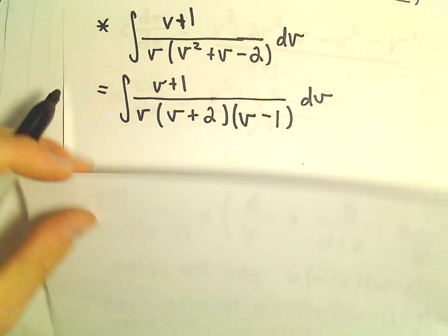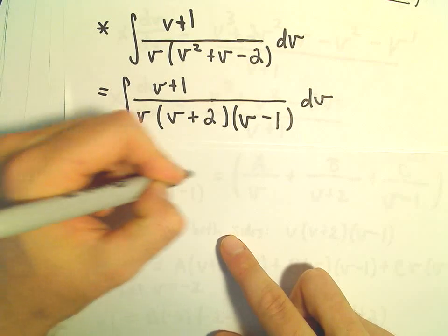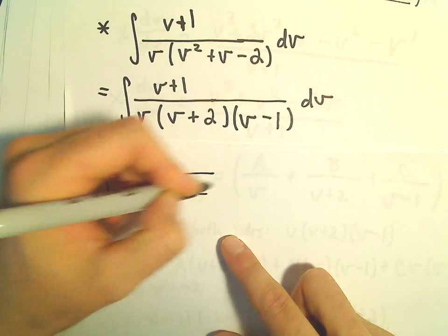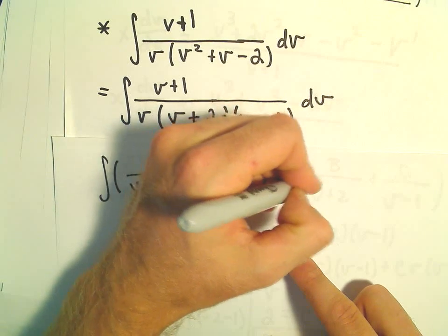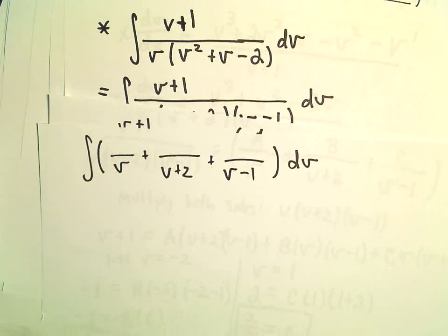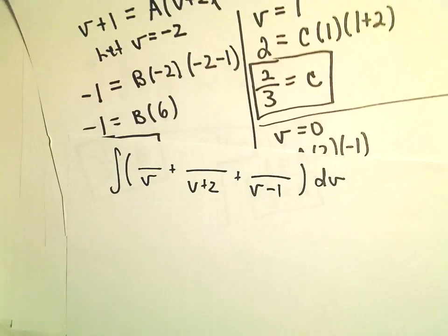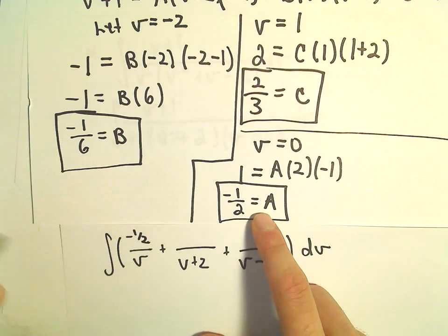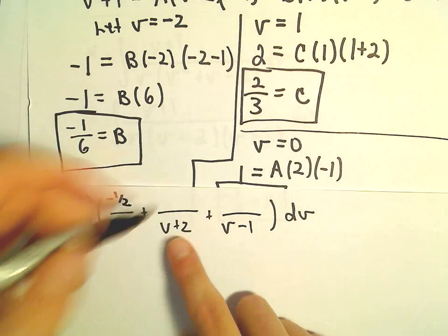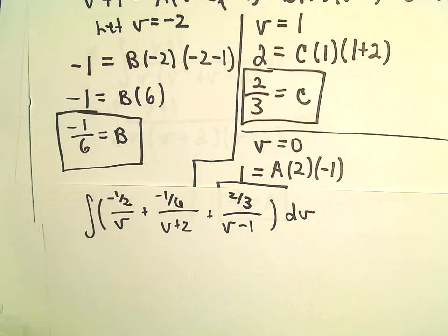So we're integrating this function using partial fractions. We break it up as A/v + B/(v + 2) + C/(v - 1). Our values are: a = -1/2, b = -1/6, c = 2/3. So we've now done our partial fraction decomposition and broken up the integral on the left side.